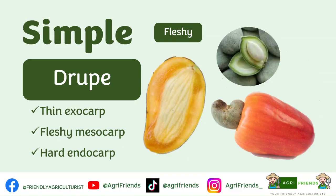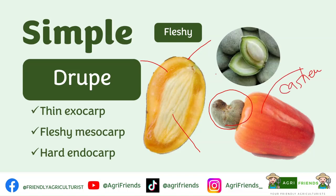Drupe has a thin exocarp, fleshy mesocarp, but the endocarp is hard. Examples are mangoes, plum, and cherries. This is the thin exocarp, the fleshy mesocarp, and this is the hard or leathery endocarp. Cashew is a drupe. The true fruit is this part, while this one is the accessory fruit or the cashew apple, a pseudofruit originating from the hypocarp or an enlarged edible peduncle.